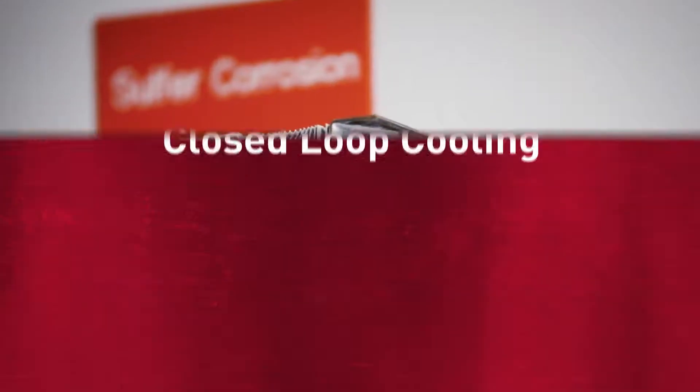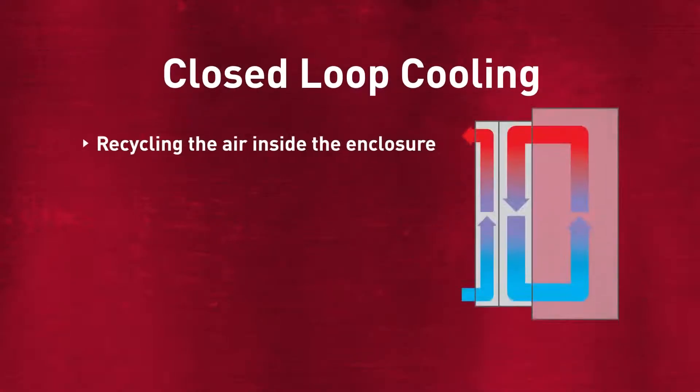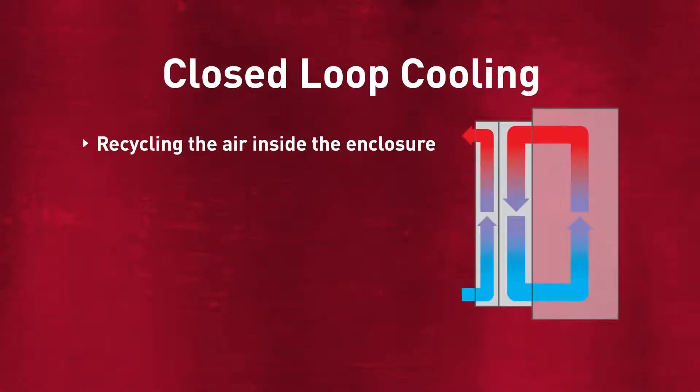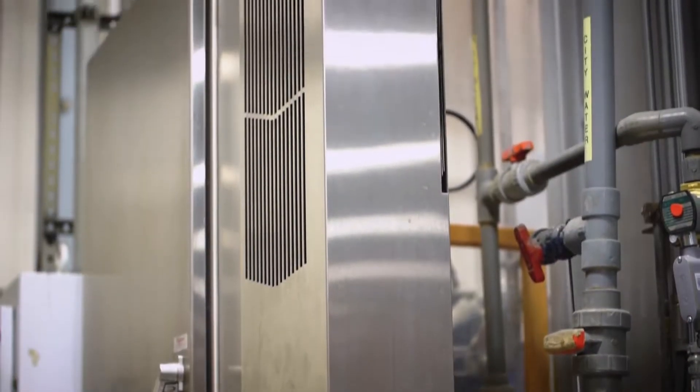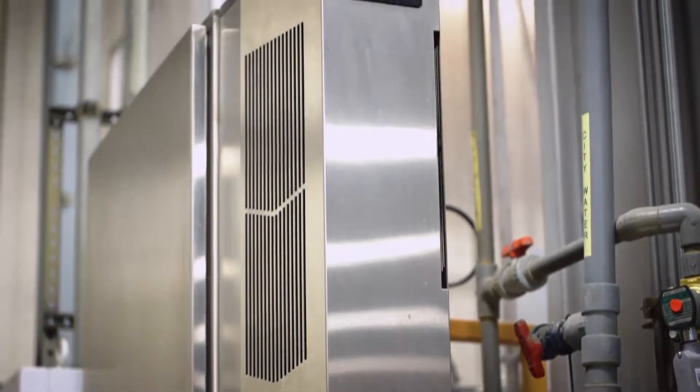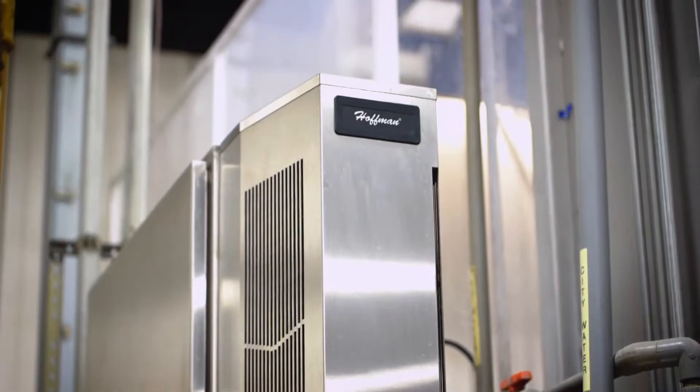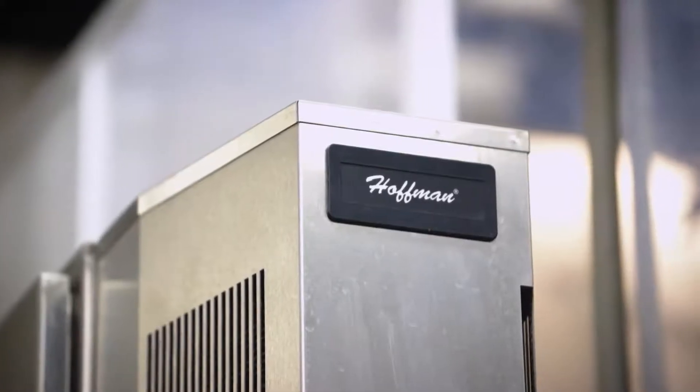In a closed-loop situation, what you are doing is recycling the air inside the enclosure. By recycling the air inside the enclosure, you're not introducing moist outside air, protecting your equipment from dangerous contaminants and dust. Closed-loop cooling doesn't have to be an air conditioner — it can be a heat exchanger as well. The big thing about closed-loop cooling is maintaining the integrity of the air inside the enclosure.